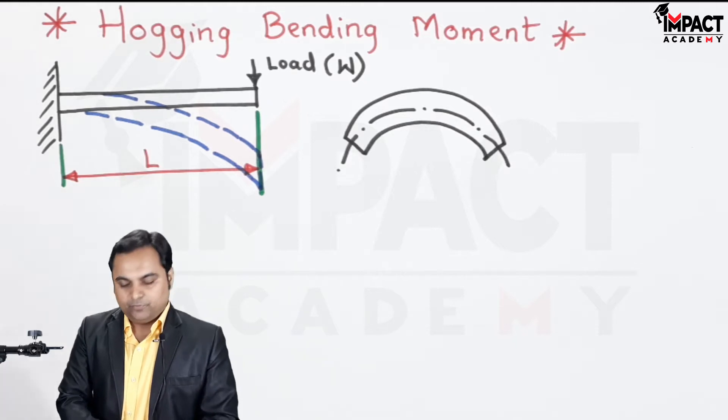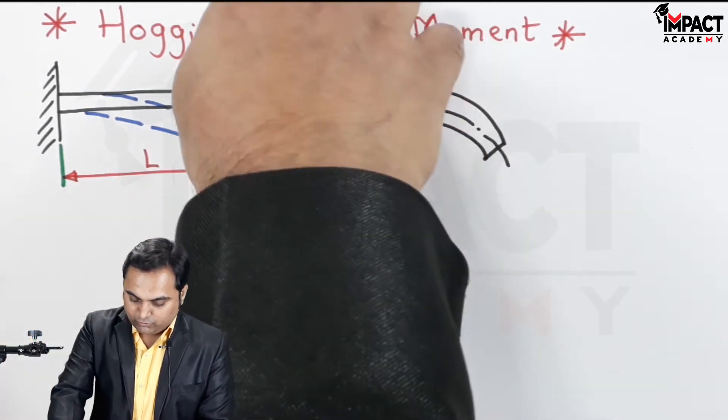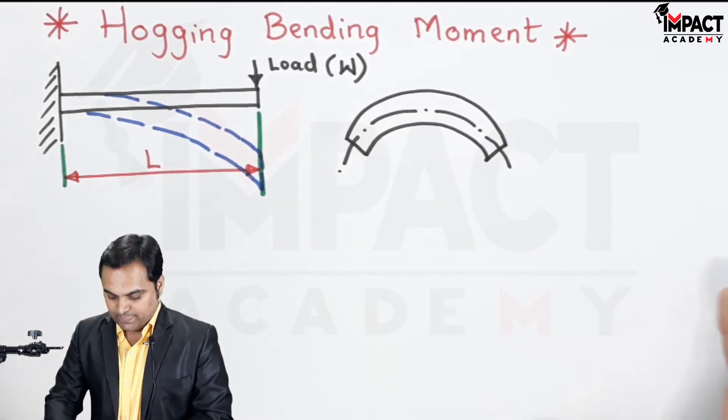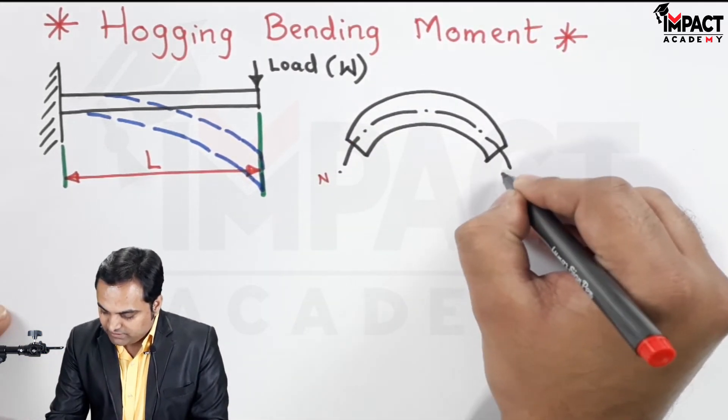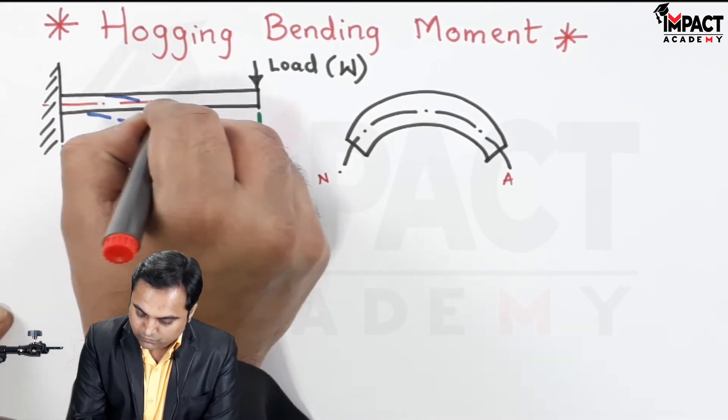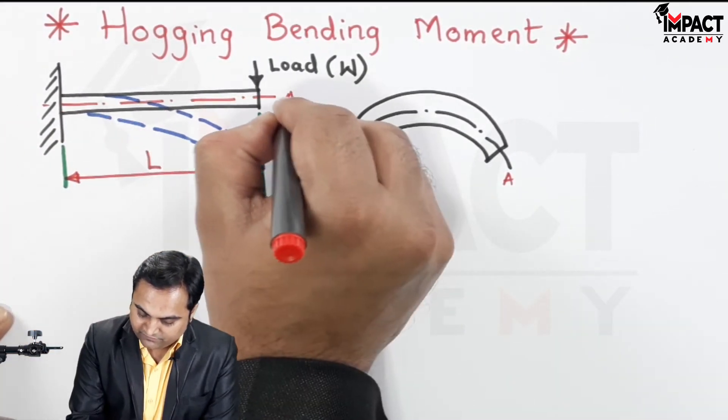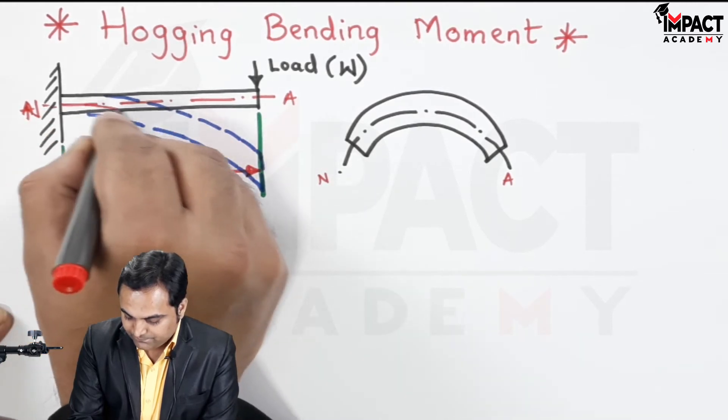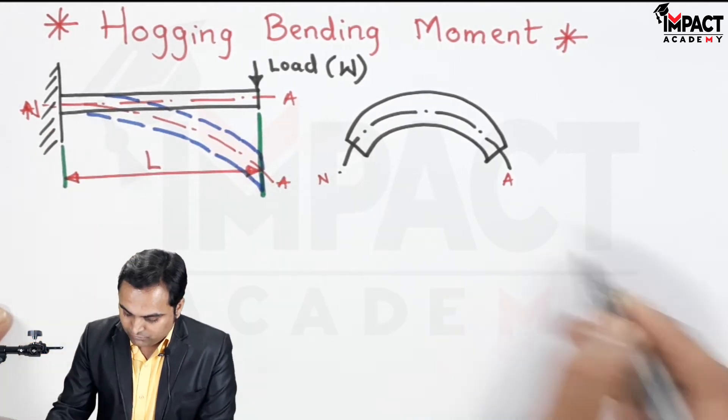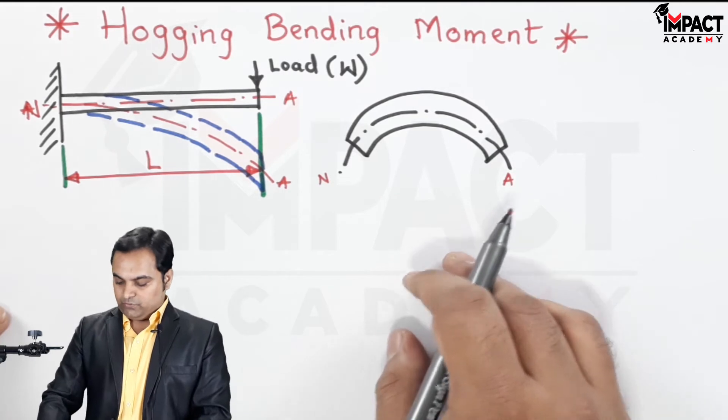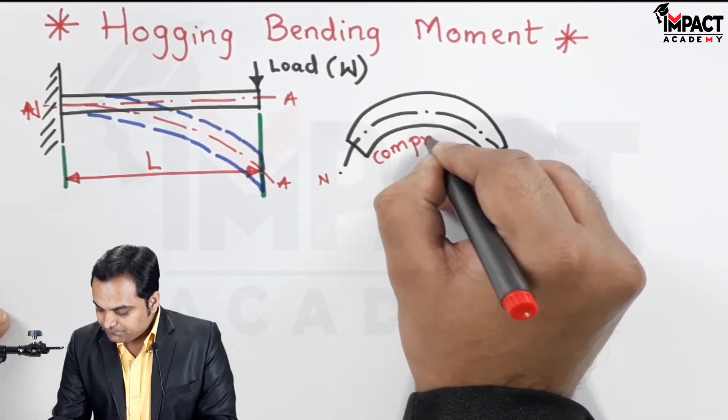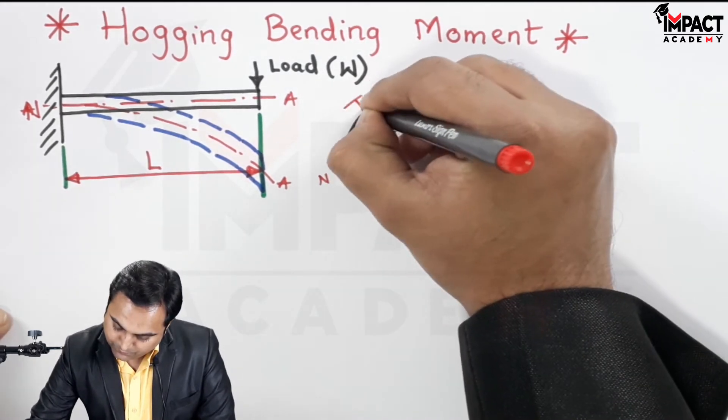Now when there is hogging bending moment, as can be seen over here when the load acts, the beam bends in such a fashion which is denoted here. There is this neutral axis whose length remains constant even after bending, denoted by NA, also called as a neutral layer.